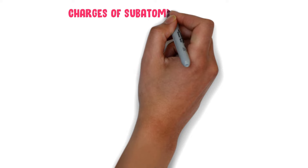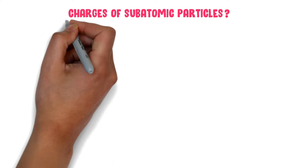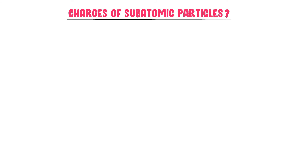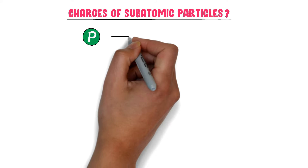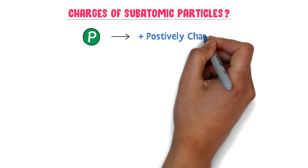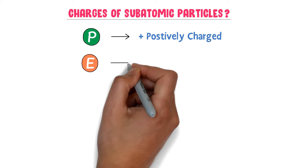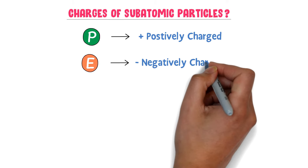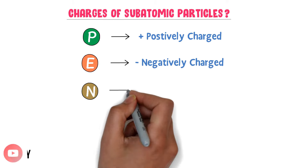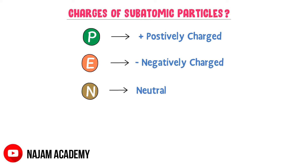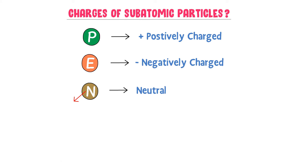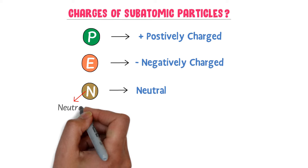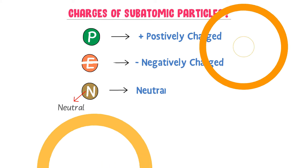Now, what about the charges of subatomic particles? The proton is a positively charged particle, the electron is a negatively charged particle, and the neutron is a neutral particle. Always remember that N in neutron stands for neutral.